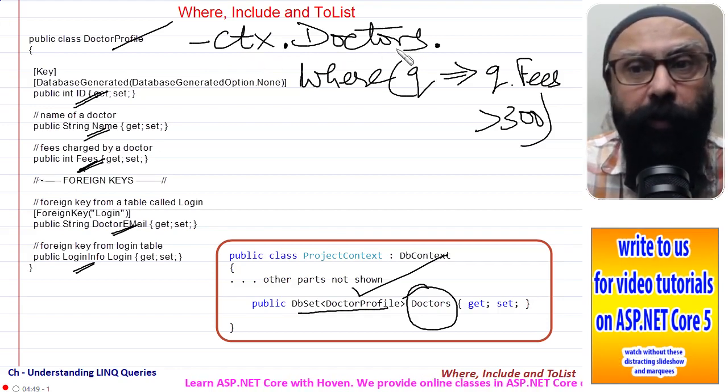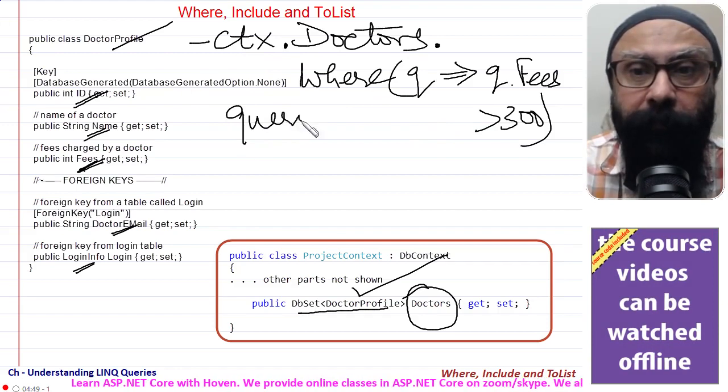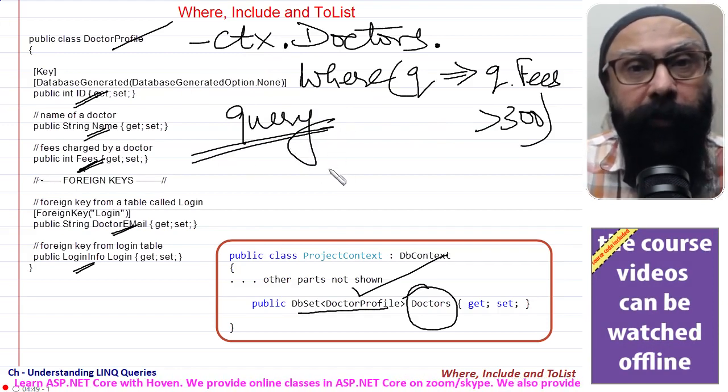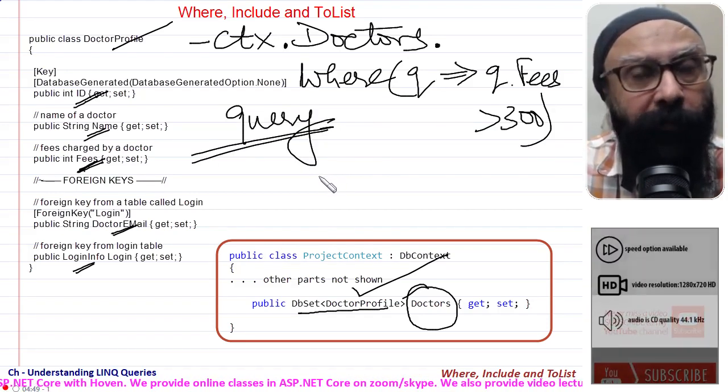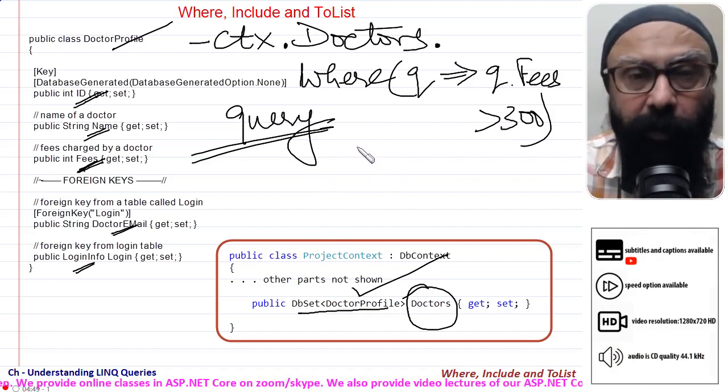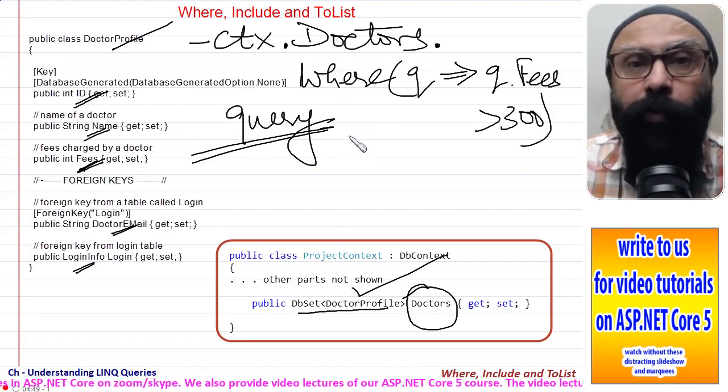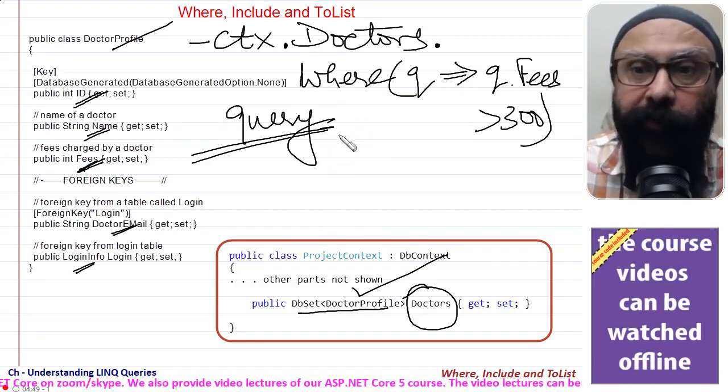We want to search all the records. Now when I write it like this, context dot Doctors dot Where something, then this is a query. This is simply an expression of query. It is not executed yet. To execute this query we need to do either of the things.